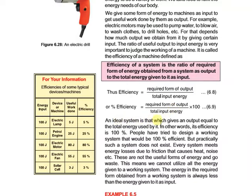An ideal system is one which gives an output equal to the input energy used by it. If the output energy equals the input energy, we call it an ideal system. In other words, its efficiency is 100%.